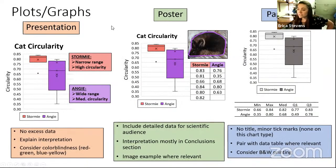Plots and graphs. For presentations, make sure that there's no excess data being shown in the presentation. Use all the data that you need and show all of the data that you need to make your point, but don't over-show data, because if there is excess information, it's just going to confuse the audience and they're not going to understand your point. And add interpretation of the data onto the slide, so that people don't have to both listen to you and try to interpret the data themselves. So here, that would be my saying, Stormy has a narrower range of circularity and a higher circularity, whereas Angie has a wider range of circularity, but she has a more medium circularity. And consider colorblindness, that's for almost any of these, but the common colorblindness is red, green, and blue, yellow, so just keep that in the back of your mind whenever you're making anything that's colorful.